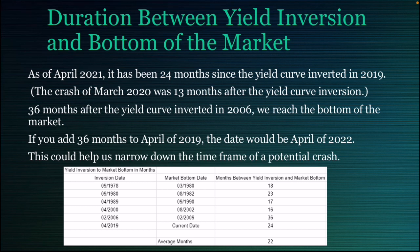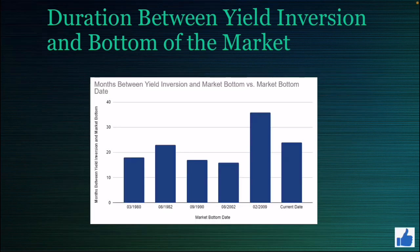In this chart, it's showing the duration between when the yield curve inverted and the bottom of the market. You can see visually 36 months between the time period of the inversion and the bottom of the market for 2009, and we're currently at 24 months.